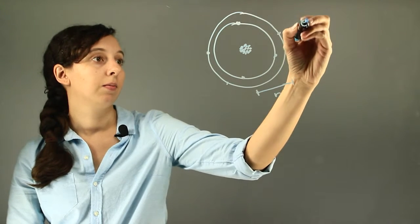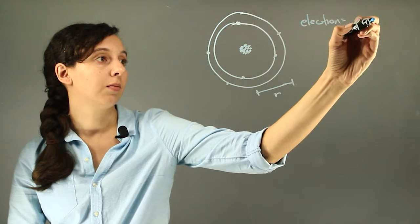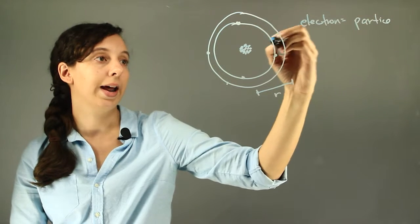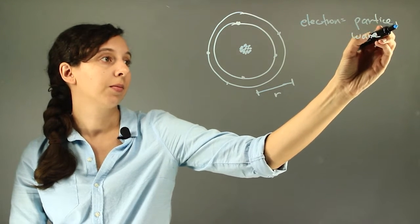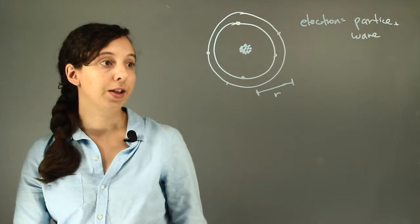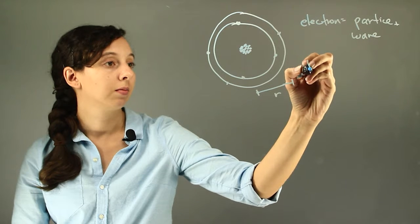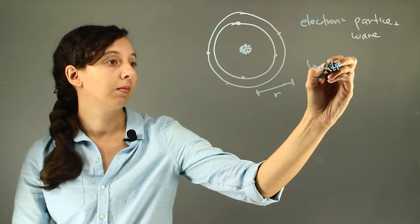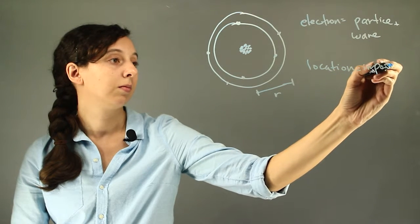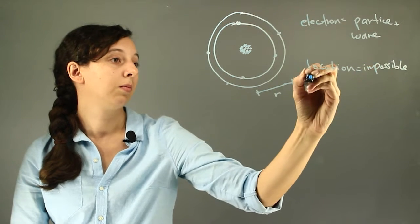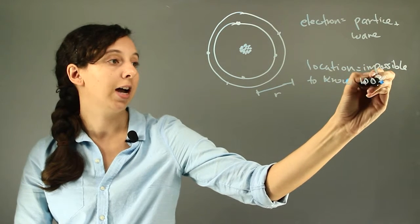So remember that an electron acts as both a particle, so what we draw it as, and also a wave. And so it's important to know that you can never actually measure exactly where an electron is at any given time.